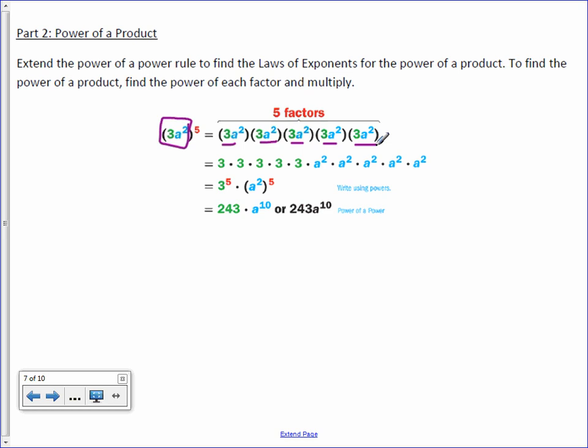Well, there are 5 3's and there are 5 a squareds. We can rewrite the 3's as 3 to the 5th. And we can rewrite the a's as a squared to the 5th.